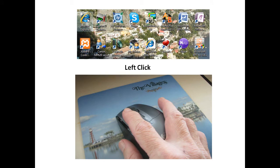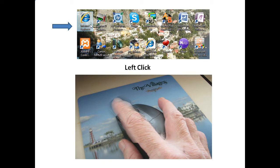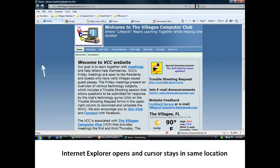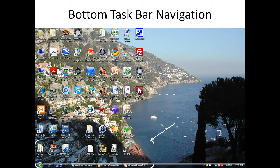Here is a left click example on how to open up a program on your screen. You'll notice that the cursor is on Internet Explorer at the top. You left click and the icon is highlighted, but to open it you don't single click — you have to double click. When you double click, a full window opens and the cursor stays in the same location.